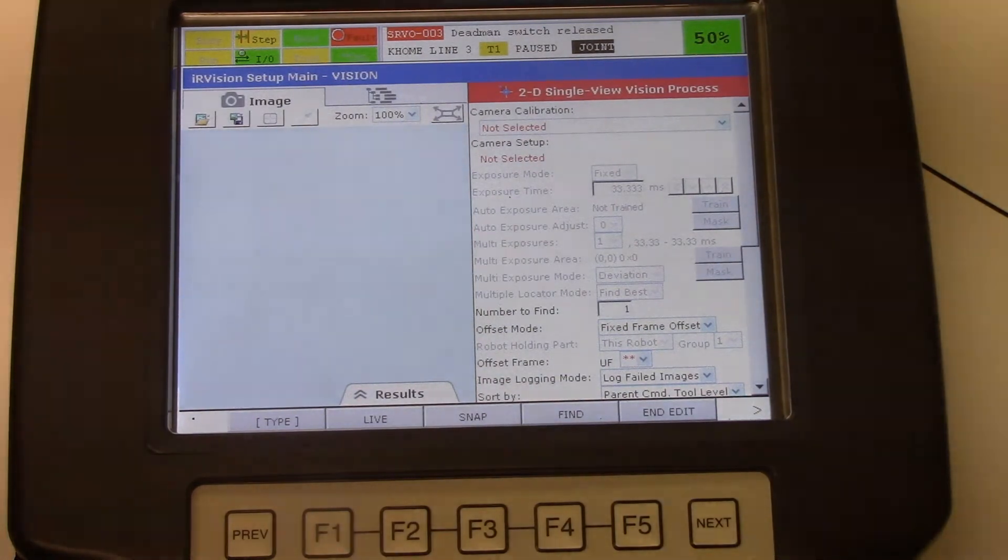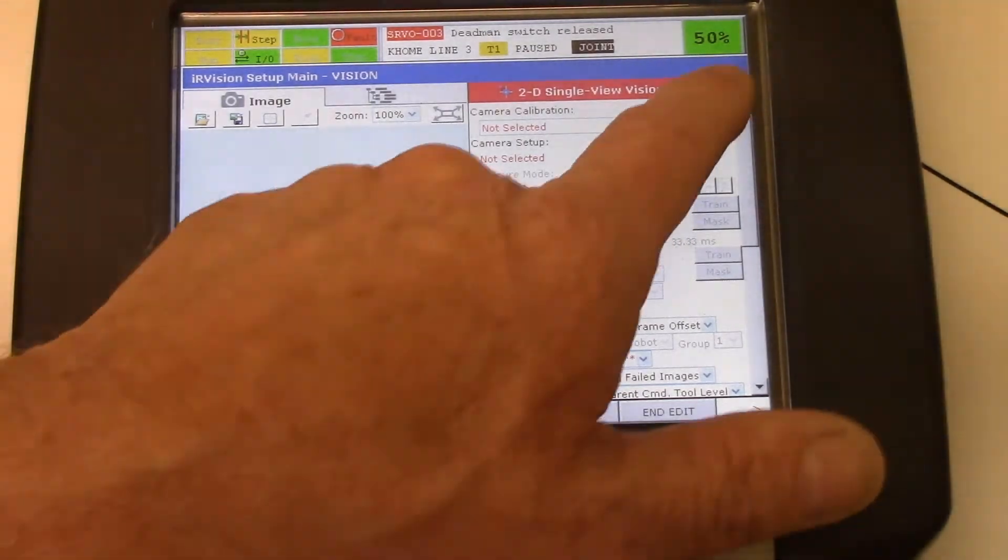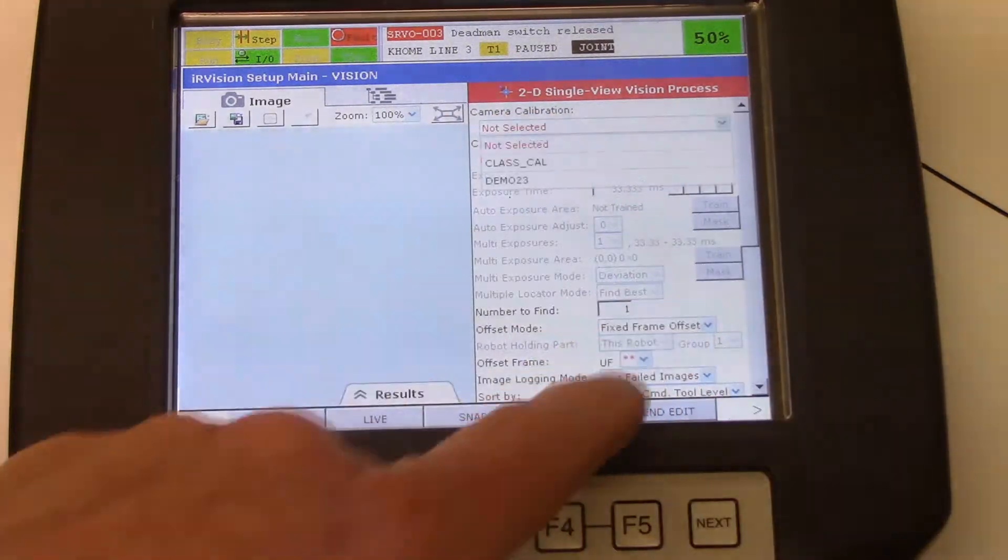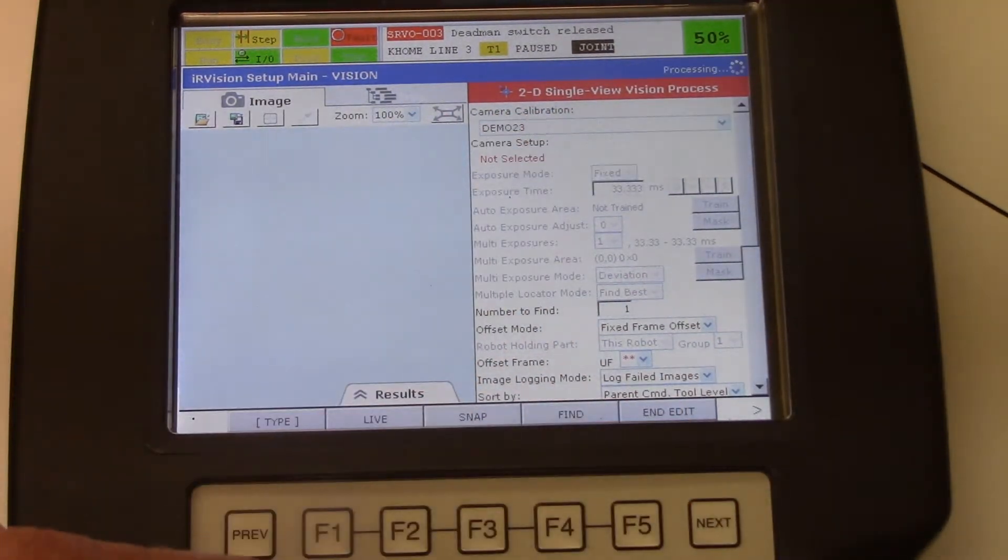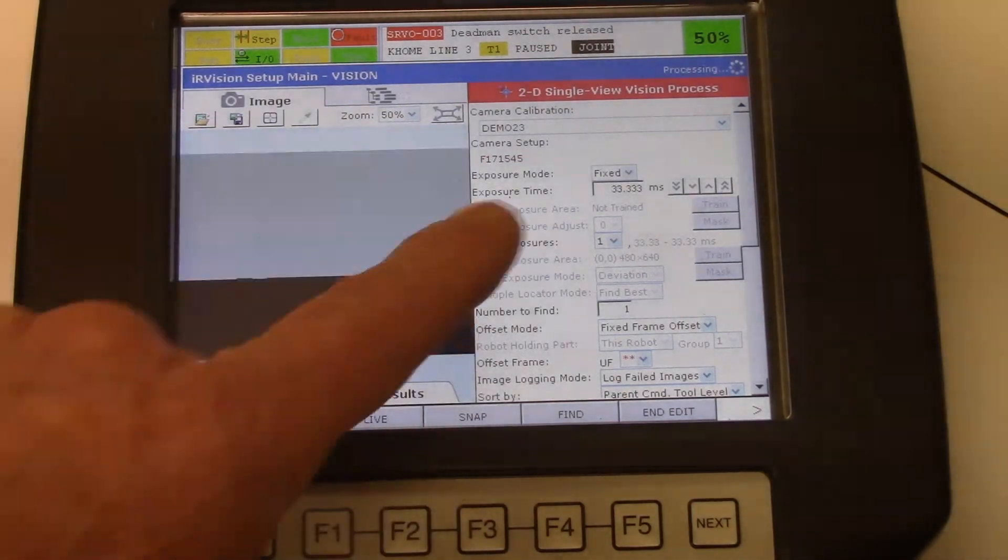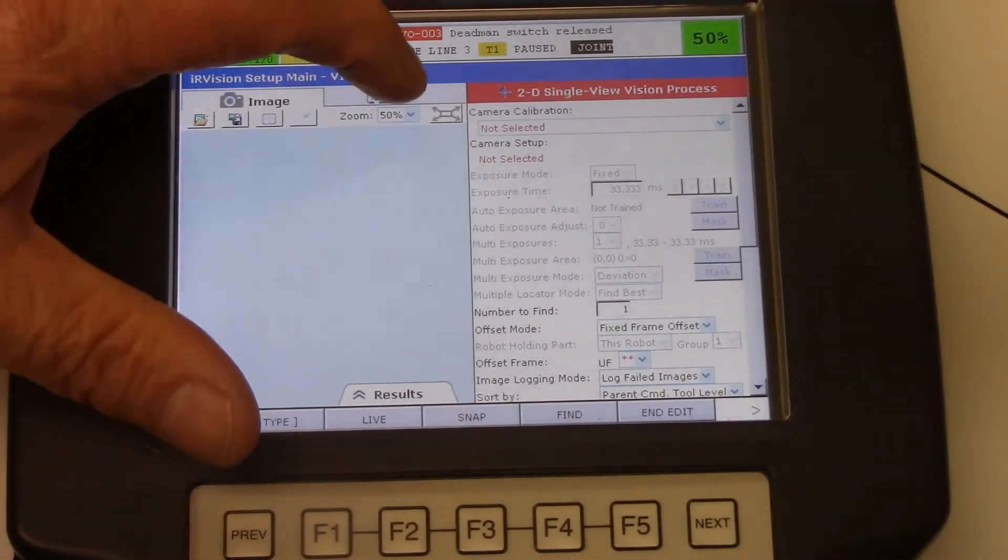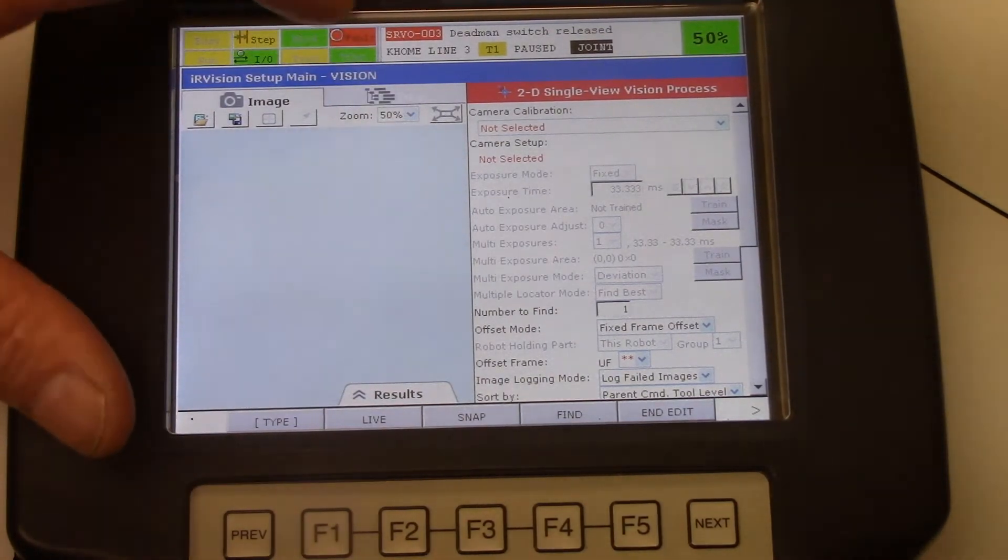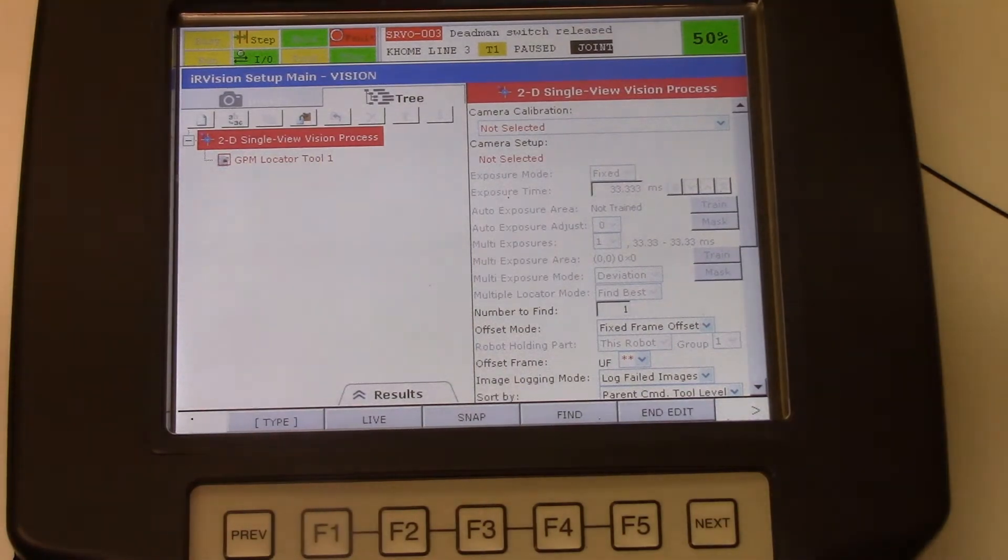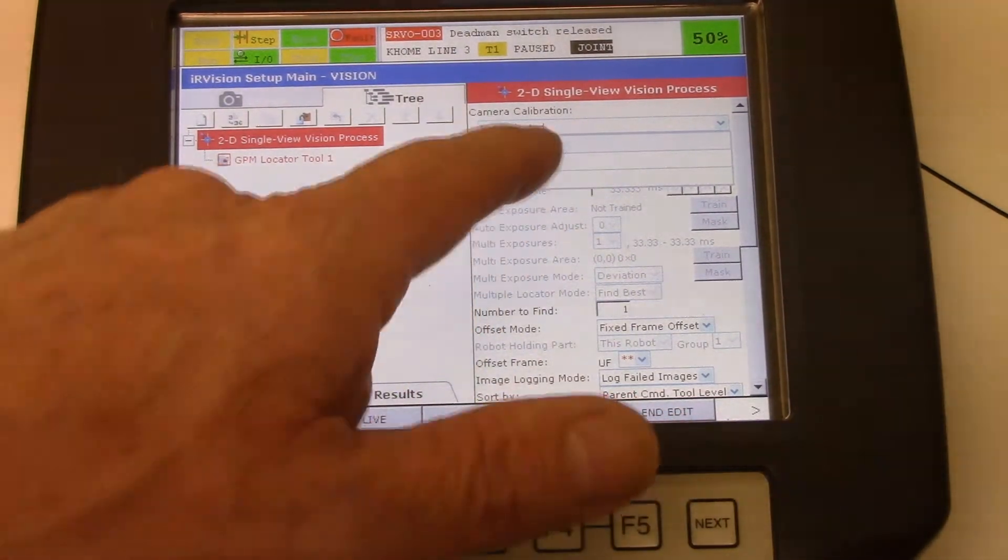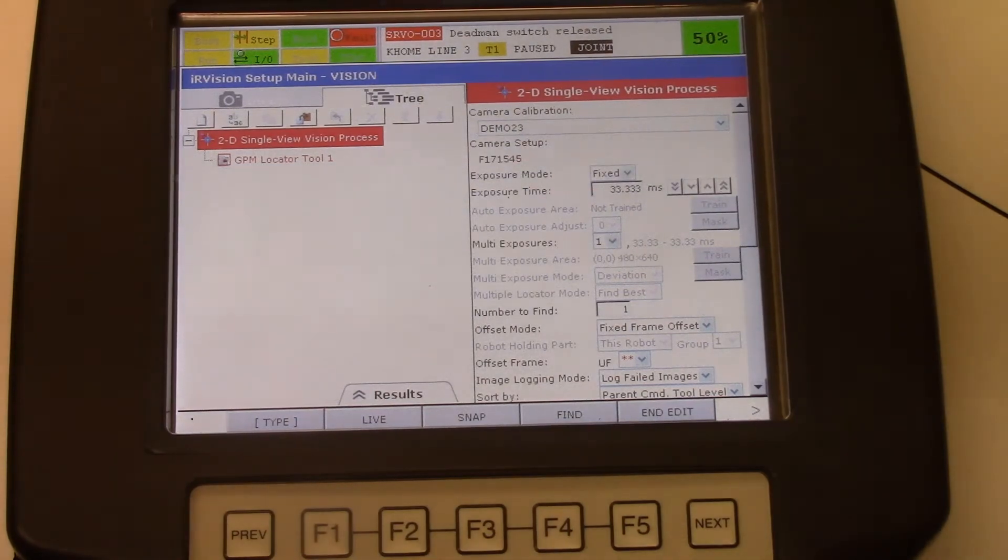The first thing we're going to need to do is to select the camera calibration that we created earlier. So we'll bring down the drop menu here and we'll select demo 23. The camera will already be selected. That would be the camera we use for the calibration. Under the tree, select tree. 2D single view vision process should be highlighted. And we're going to select a calibration. So you needed to have had a calibration already created. We'll select the one that we did earlier, demo 23. And the camera will automatically be selected because that was the camera we used to do this calibration.